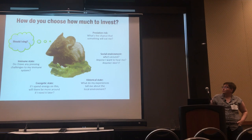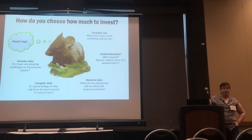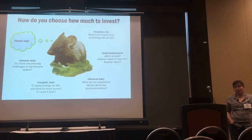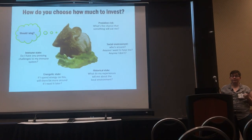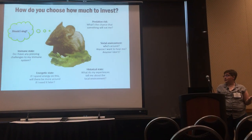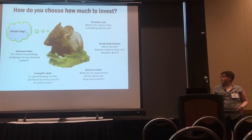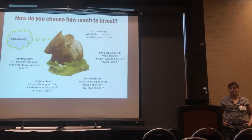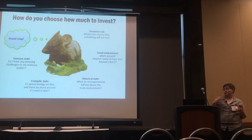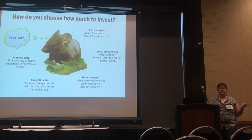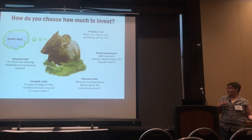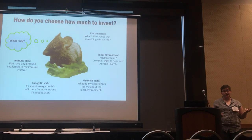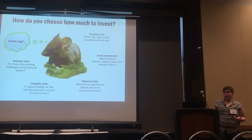So, how do you choose how much to invest? If you are a little singing mouse, you've got to think about a whole bunch of different context cues. You have to think about: what's my immune state, or anything that might be coming to infect me? What's my energetic state? If I spend some energy on this, is there going to be more around later? What's my predation risk — is there something that might overhear me and eat me? What's the social environment — who's around me? Is there something I want to hear, or something I don't want to hear me? And my historical state — what are my experiences telling me about the local environment? These are all things that these animals have to take into consideration when they're deciding whether or not they want to signal.